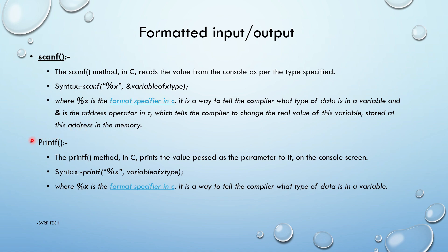Next is the printf statement. Printf prints the values passed as parameters to it on the console screen. The syntax is: printf("%x", variable_of_x_type). Same as before, %x is the format specifier — we use format specifiers here as well.